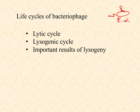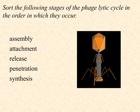Let's talk about the two main cycles: the lytic cycle and the lysogenic cycle, and then we're going to look at some important results of the lysogenic cycle in particular. Pause the video here and take these five terms — stages of the lytic life cycle of bacteriophage — and sort them in order: what happens first, then what, and how does it all end? Number them one through five, then come back.